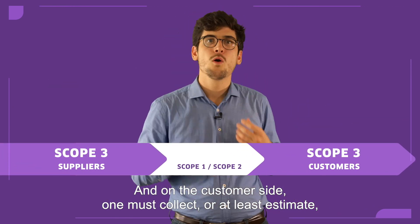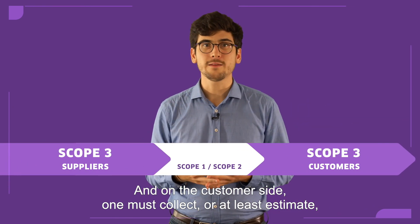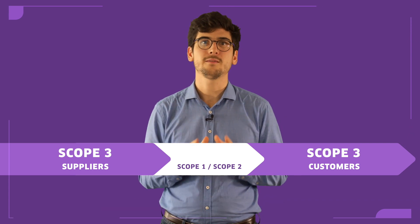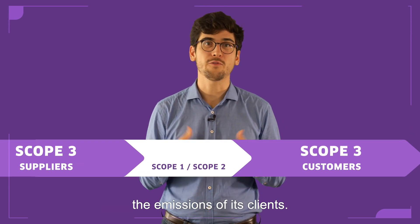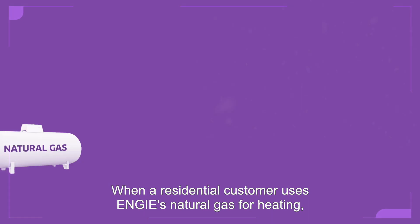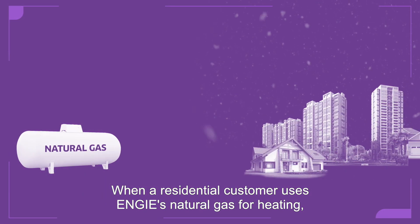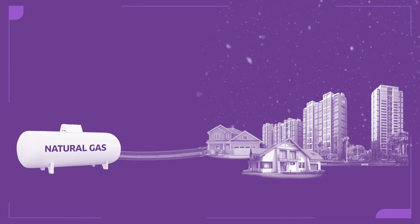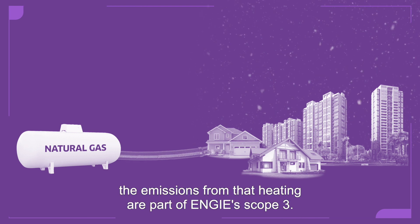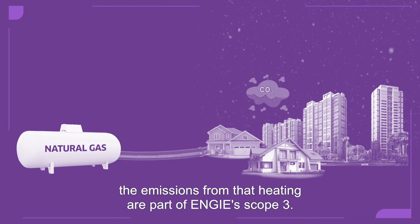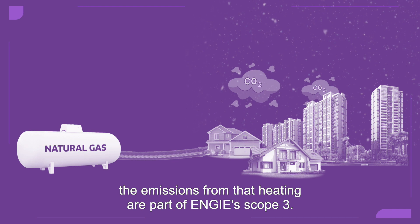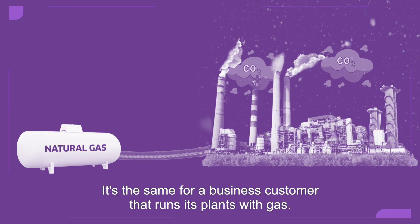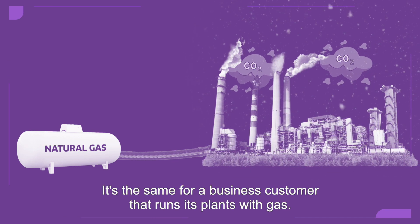On the customer side, one must collect, or at least estimate, the emissions of its clients. When a residential customer uses Engie natural gas for heating, the emissions from that heating are part of Engie's scope three. It's the same for a business customer that runs its plants with gas.